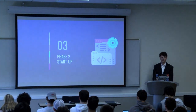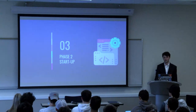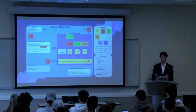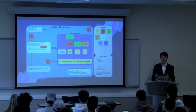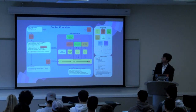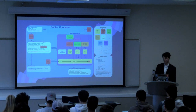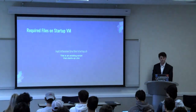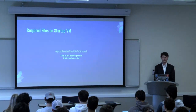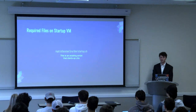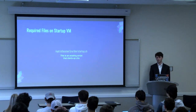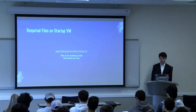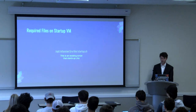Phase two only needs one file, and that is the startup.sh file. This is an existing file that starts up the JIRA instance on VM number two.